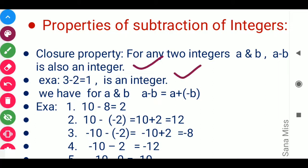For any integers a and b, we can also write subtraction like this: a minus b is equal to a plus (negative b). They both are the same.